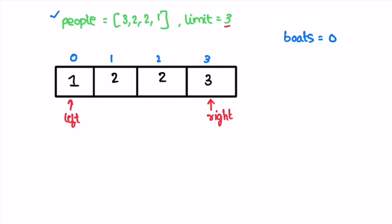The limit is equal to three, denoting the max weight each boat can carry. In each iteration we choose at least one person, which will be the heavier person in the worst case, since all people must be sent and the heaviest person will always be less than or equal to the limit. So in each iteration we check if the sum of weights at left and right is less than or equal to limit. If so, we send both people; otherwise we send only the heavier person.